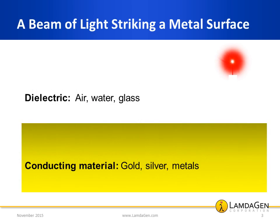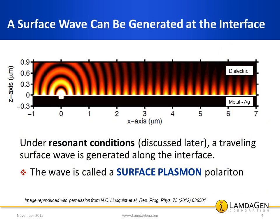We start by considering what happens when a beam of light traveling through air or water — a non-conductor, more generally called a dielectric — reaches the surface of a conducting material or metal. At the interface between the metal and the dielectric, something remarkable happens. Under specific conditions, called the resonant conditions, a traveling surface wave is generated at the impinging point of light. The wave travels along the interface, represented in this picture by the intensity contour of the associated electromagnetic field. This wave is called a surface plasmon polariton, commonly referred to as a surface plasmon.